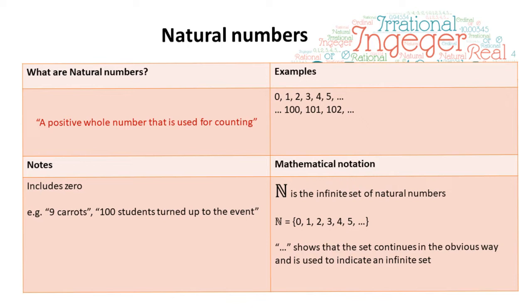Using mathematical notation, we can use this N symbol to represent the set of all natural numbers from 0 increasing upwards. The three dots means the set continues in the obvious way.